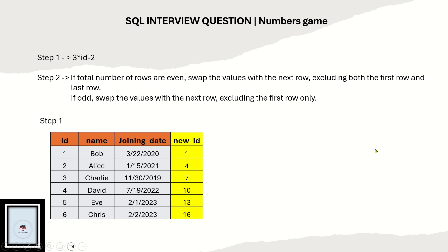For step one, the new id is calculated using 3 * id - 2. So for id 1: 3 * 1 - 2 = 1. For id 2: 3 * 2 - 2 = 4. For id 3: 3 * 3 - 2 = 7. You calculate this for all six rows similarly.